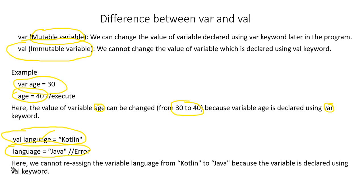Later we want to change the value of the variable language to Java, and then we get an error. Why? Because we cannot reassign the variable language from Kotlin to Java because it is declared using the val keyword. If we use val, we cannot reassign it — that's simple. I hope you now have a clear understanding of the difference between var and val in Kotlin. Let's meet in the next lecture where we will learn more about Kotlin.